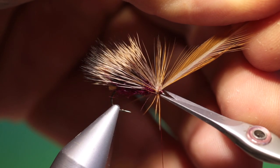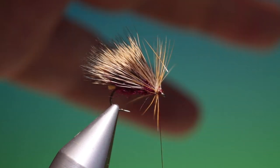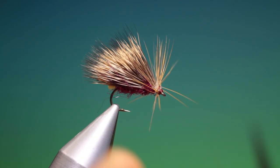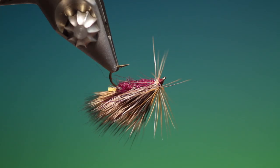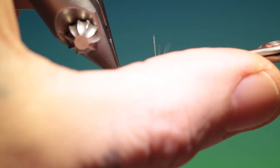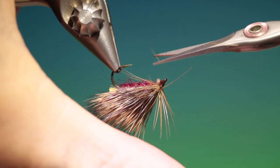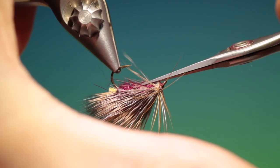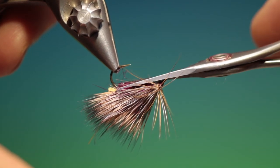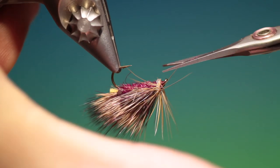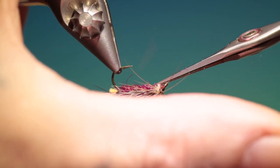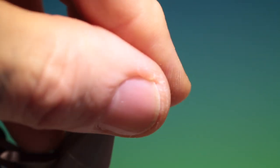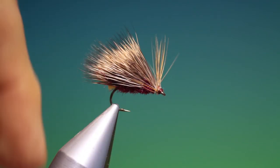Take our scissors and remove that, going to remove our tying thread. Now what we want to do is turn this upside down and we want to trim off any hackles underneath and we can trim down the seal's fur body just so it's nice and smooth. And that's it.